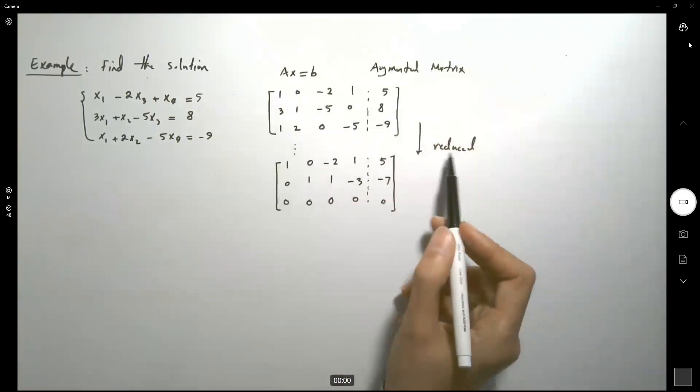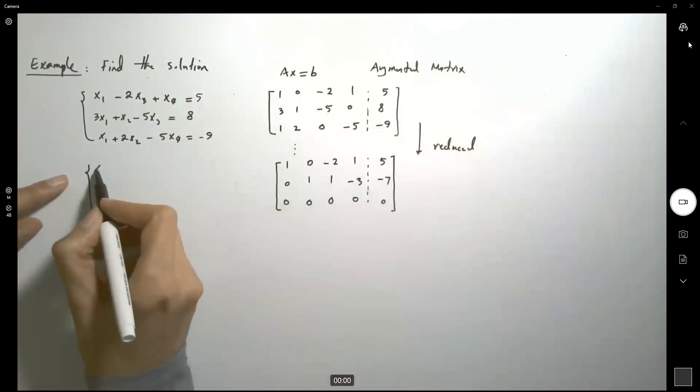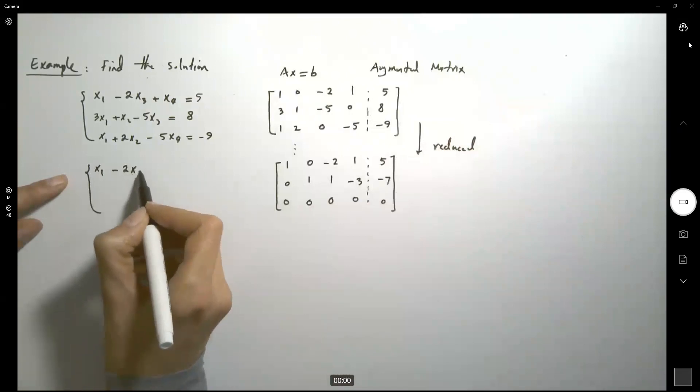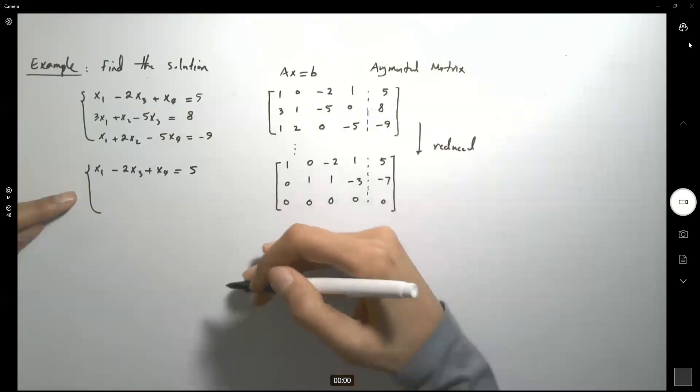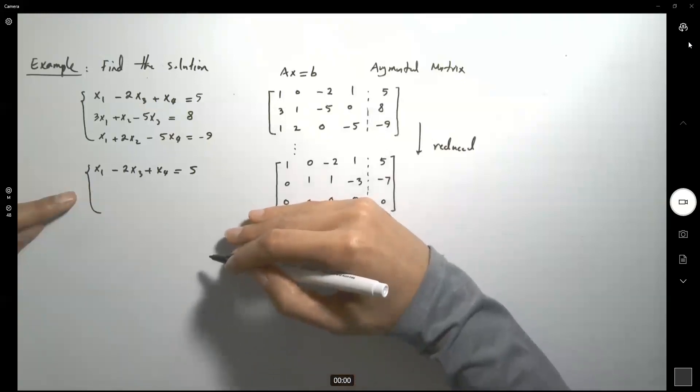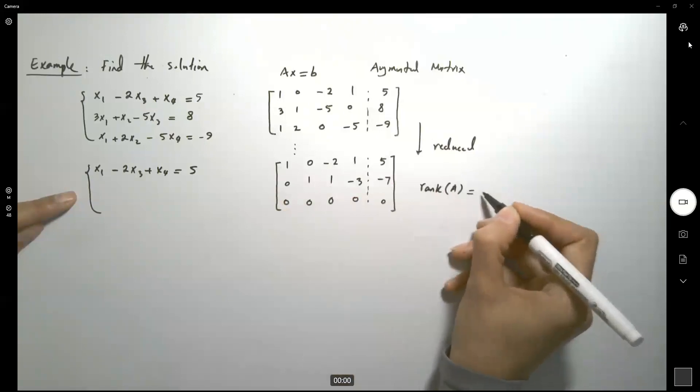We can write the matrix in reduced form, and we can rewrite the system as x1 minus 2x3 plus x4 equals 5, and then this guy is 0, so basically you have two non-zero rows, so remember the rank is going to be just 2.